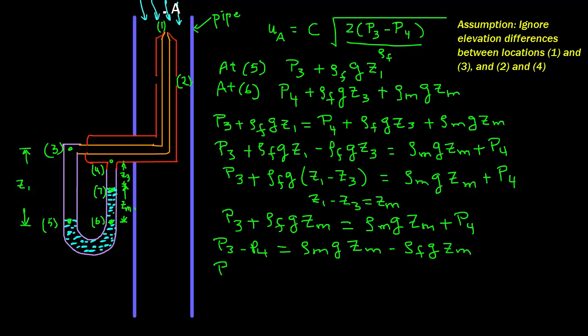So P3 minus P4 equals G times Zm times the quantity rho M minus rho F.